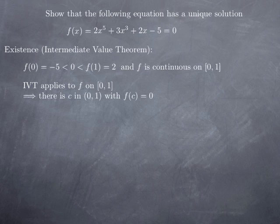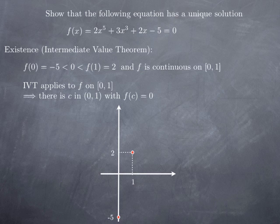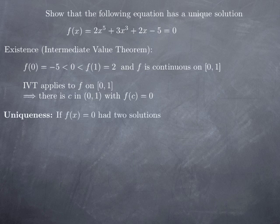So we can apply the intermediate value theorem to the function f on the interval [0, 1]. The conclusion is that the function takes all the values between the values at the endpoints — so it's going to take all the values between −5 and 2 over the interval [0, 1], and in particular it will have to take the value 0. You see that we're looking at a function that takes a value −5 at 0 and 2 at 1, and if we want to join these two points in a continuous fashion, the graph would have to cross the x-axis and therefore take the value 0. So that takes care of existence.